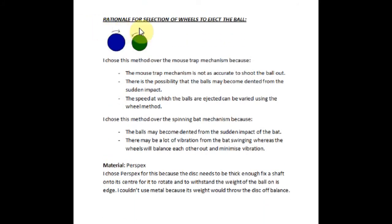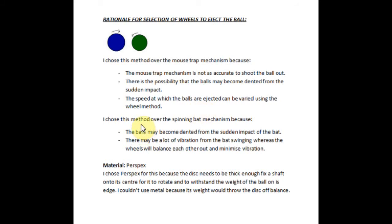Rationale for selection of the opposite spinning wheels. I chose this method over the mouse track mechanism because the mouse track mechanism is not accurate, there is a possibility the balls may become dented, and the speed at which the balls are ejected can be varied using the wheel method. I chose this method over the spinning bat because the balls become dented and there is a lot of vibration.